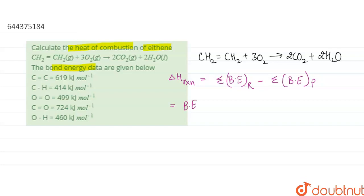Now here we have the reactant side on the left-hand side of the reaction and the product side on the right-hand side. The bond energy of CH₂=CH₂: here we can write the structure of CH₂=CH₂ — there is a carbon-carbon double bond.